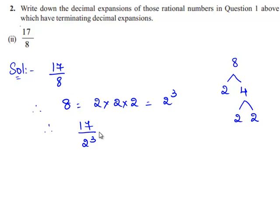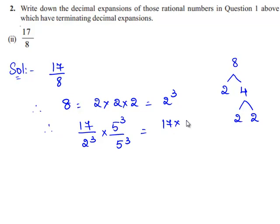Now we shall multiply the obtained rational number with 5 cubed on both the numerator and denominator. Therefore, 17 upon 2 cubed times 5 cubed by 5 cubed. This gives 17 times 5 cubed upon 2 cubed times 5 cubed.